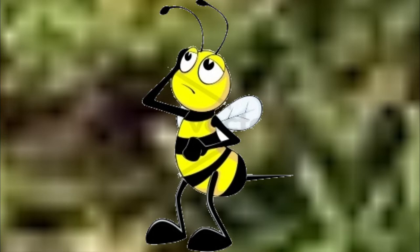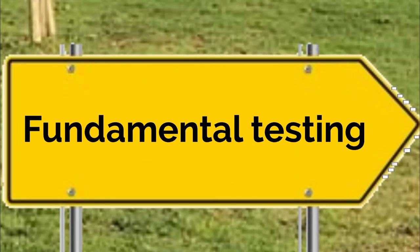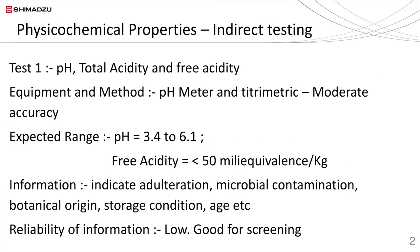After this presentation, my colleagues will take you in detail through some advanced test methodologies and ready solutions which Shimadzu can offer to achieve this challenging task. I will briefly explain some fundamental but informative tests which need to be carried out in routine laboratory checks to comply with regulations. The first and foremost simple and quick test for honey is measuring its pH and acid value. Honey has its pH always on the slightly acidic side due to the presence of organic acids and amino acids.